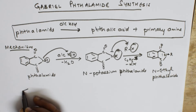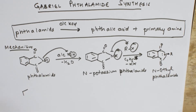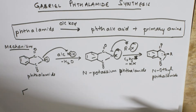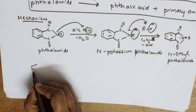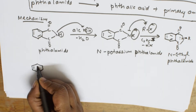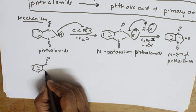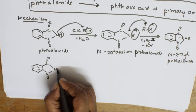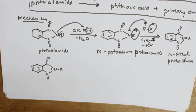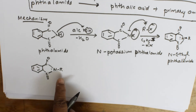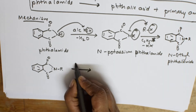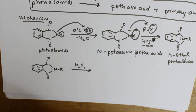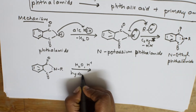Now I am going to take the same N-ethyl phthalimide. The benzene ring remains with alternate pi bonds, C=O on both sides, and N with R group attached. To this N-ethyl phthalimide we are going to perform hydrolysis — hydrolyze means addition of H2O (water). This process is called hydrolysis.